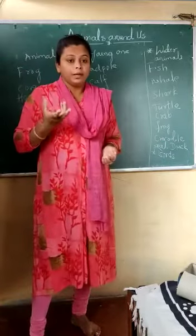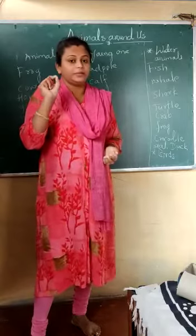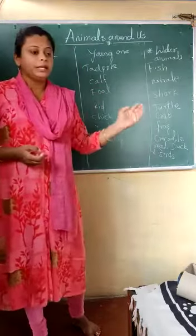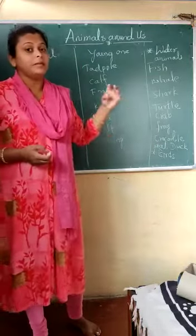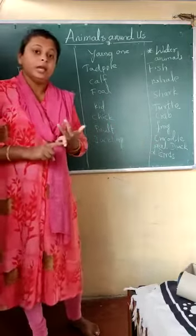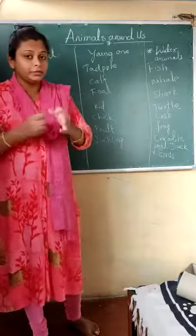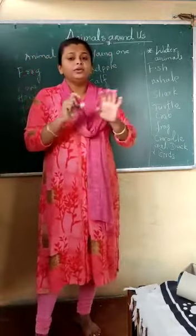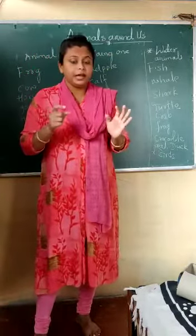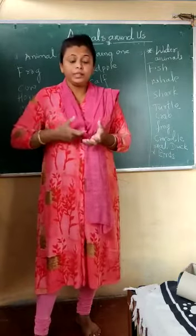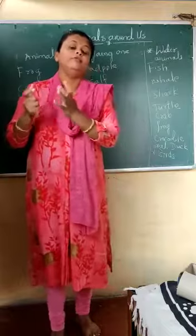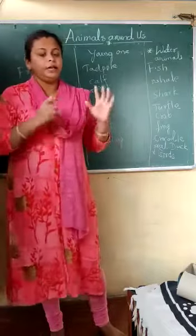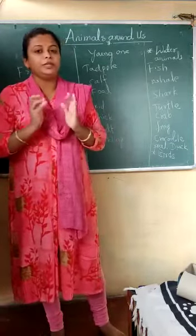Birds prepare their nest using small threads. Some birds eat insects, some eat fruits, and some eat grains. After eating they will bring food for their babies too. Some birds do not build a nest — when they need to lay eggs they use another bird's nest. For example, the cuckoo does not build any nest; it uses other birds' nests for laying eggs and protecting its babies for a short time.